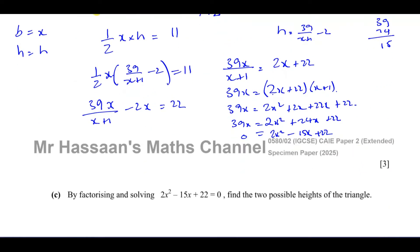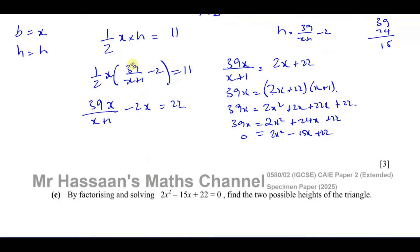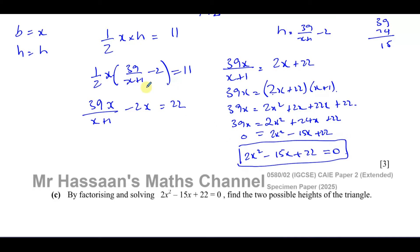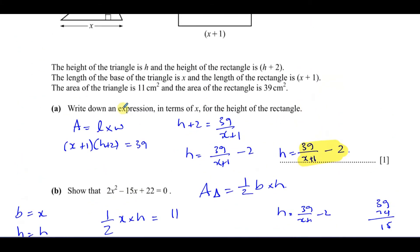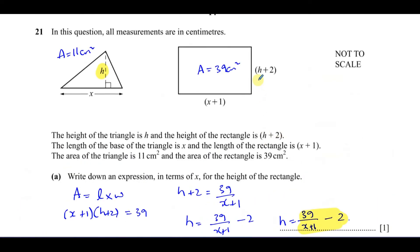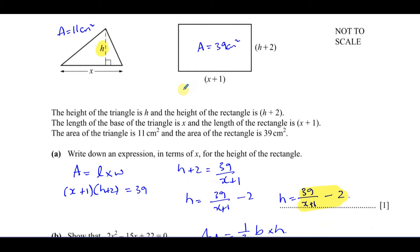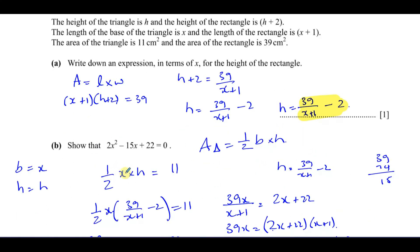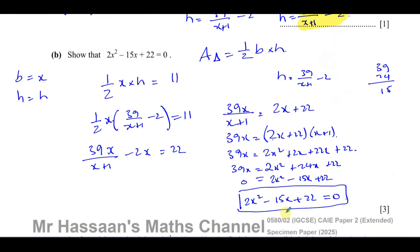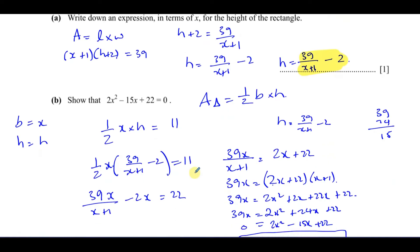So we've shown that 2x² minus 15x plus 22 equals 0. Part (a) helped us with part (b): we found h in terms of x from the rectangle and substituted it into the triangle area formula, arriving at exactly what we needed to show. Parts (a) and (b) are done.